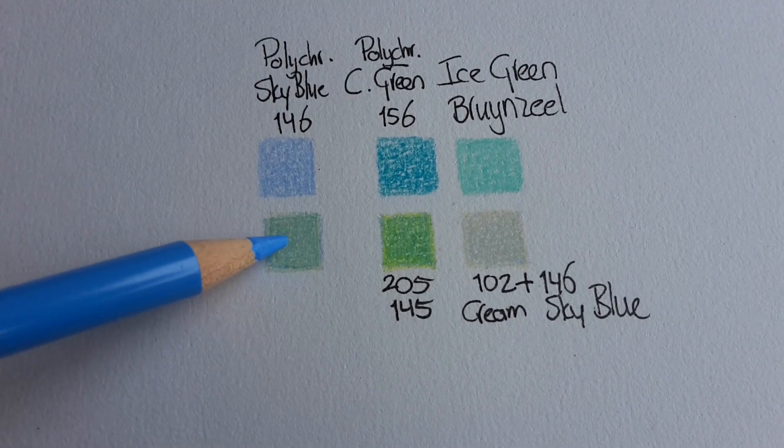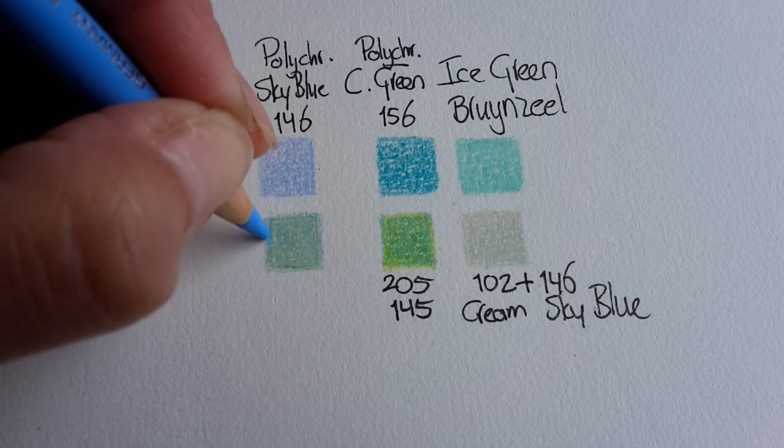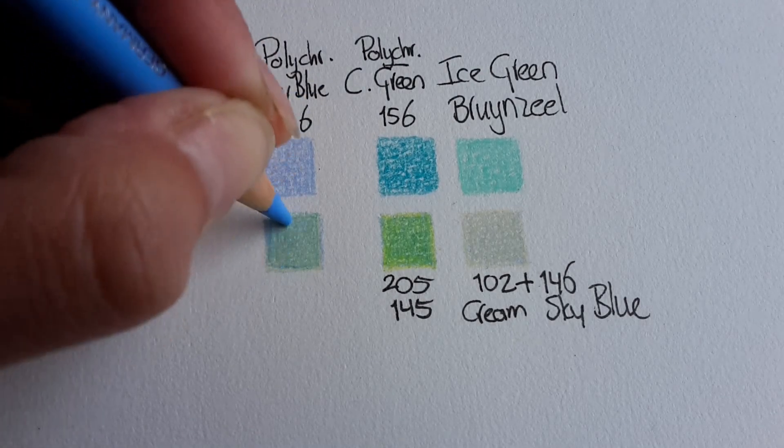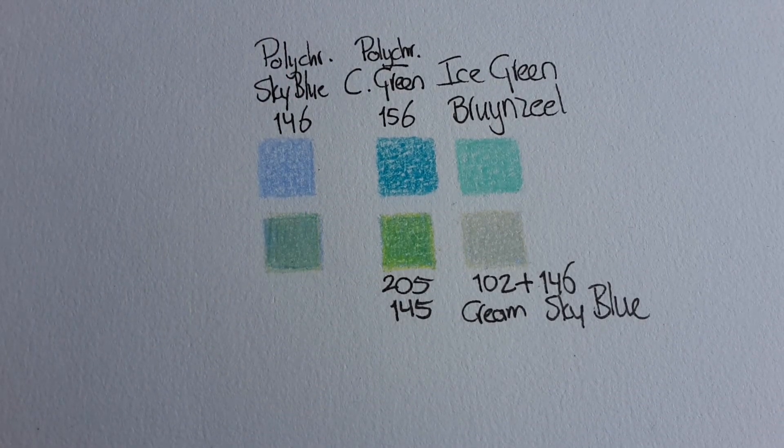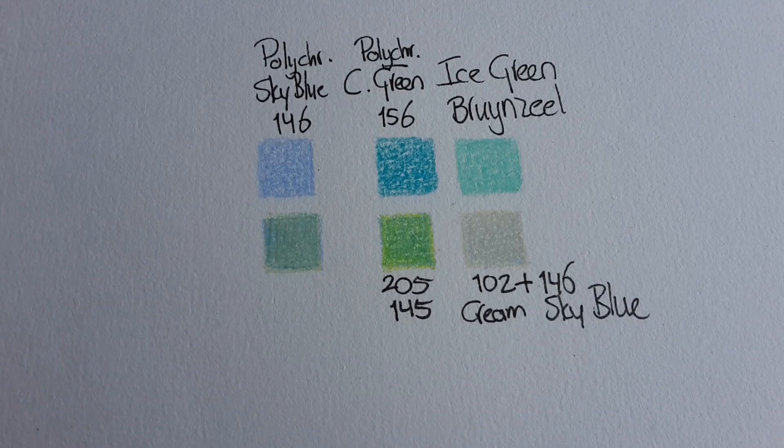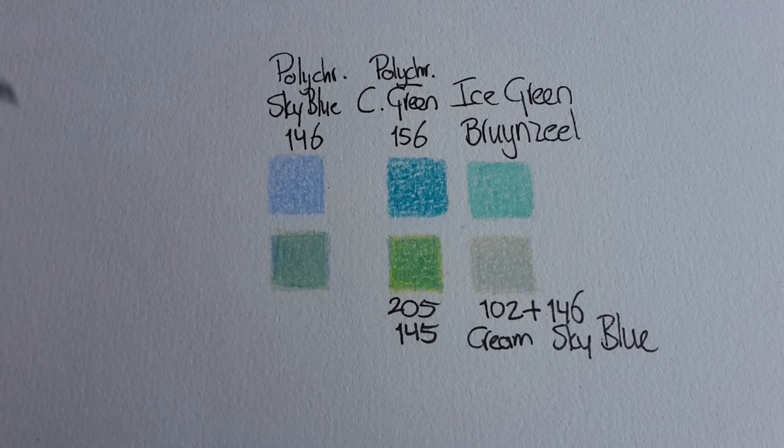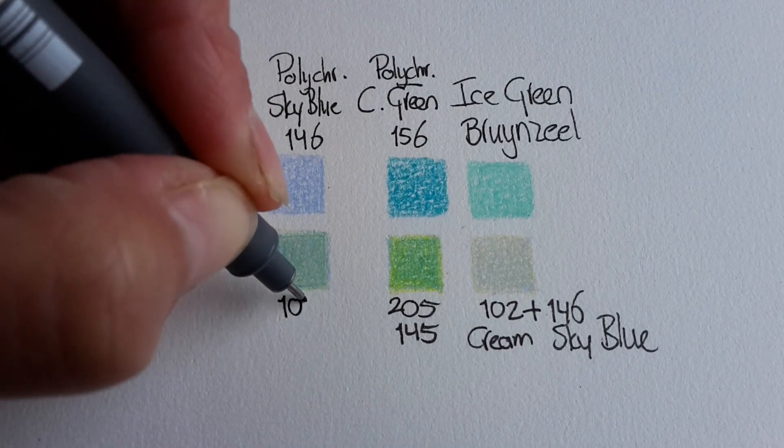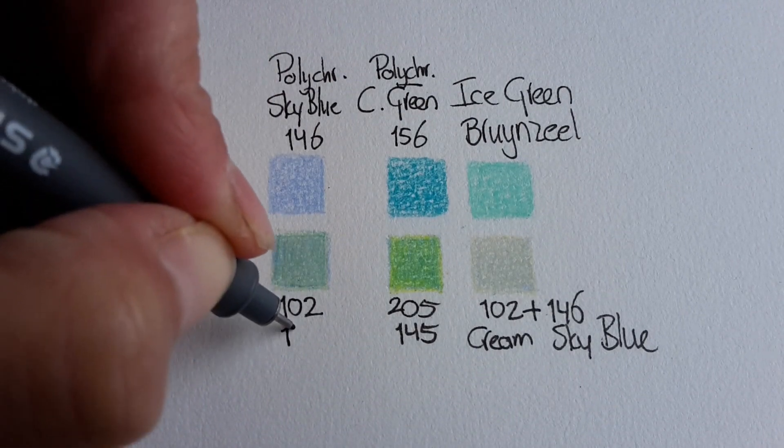What happens if I do this again but then in a different order? Let's do the yellow first and then the light blue. But let's write down the numbers first. I started with 102 cream, then I added 156.